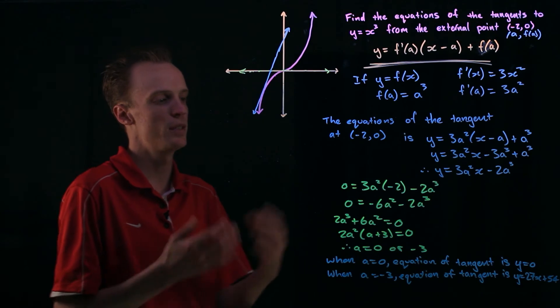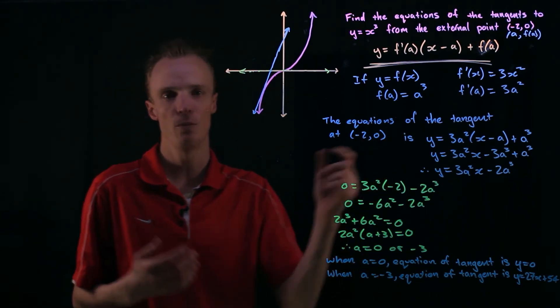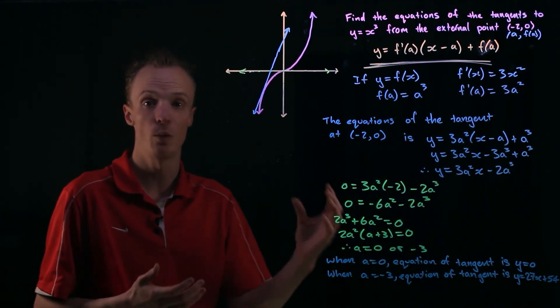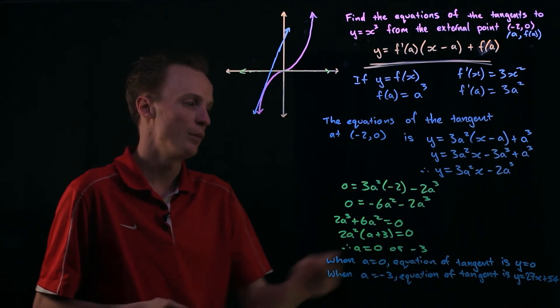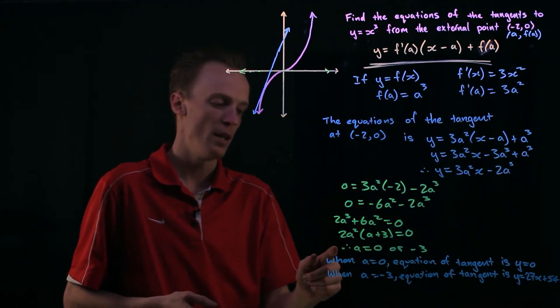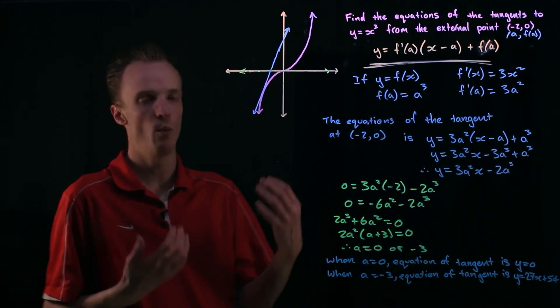Once we've got that we substitute in the point, the external point that we're looking for this equation to go through which is what we did here. And we found the value of a that worked for that.